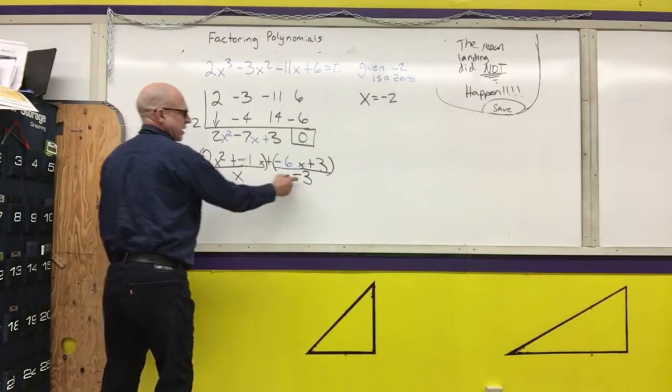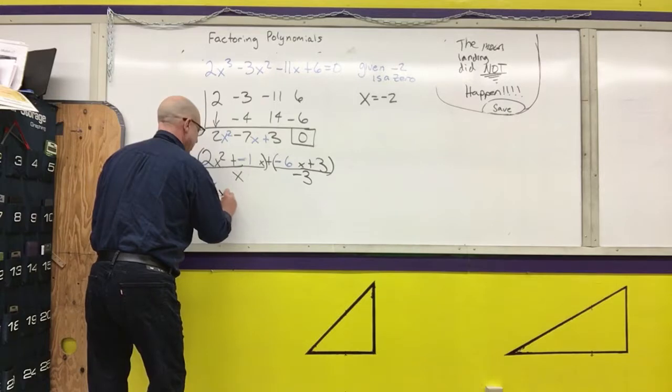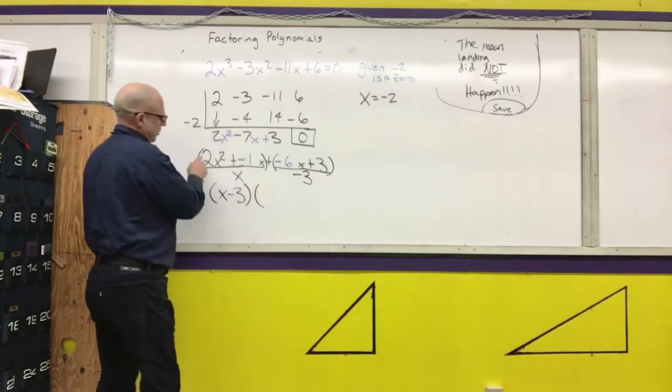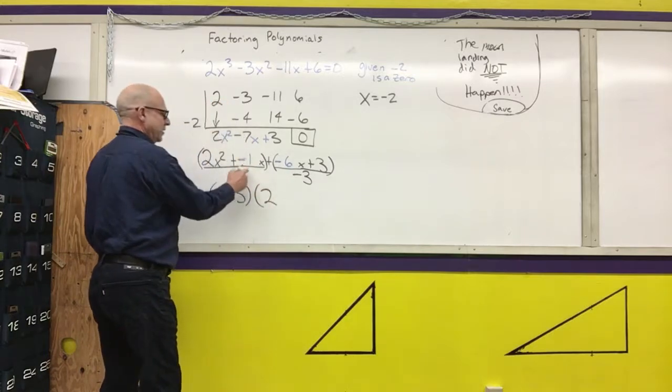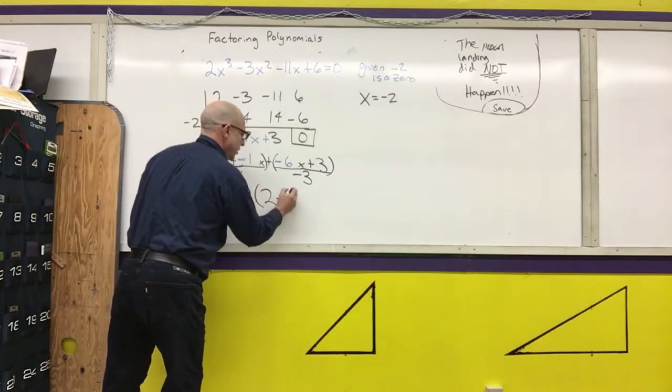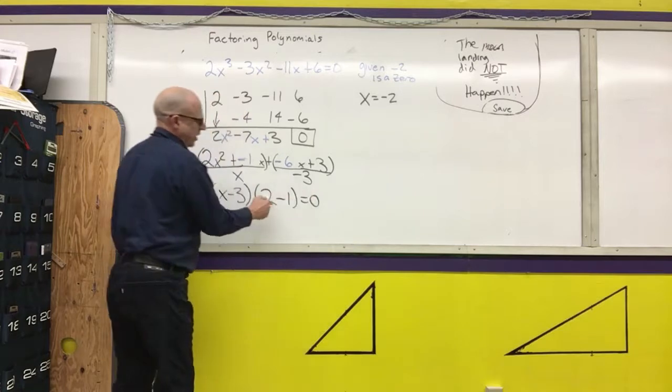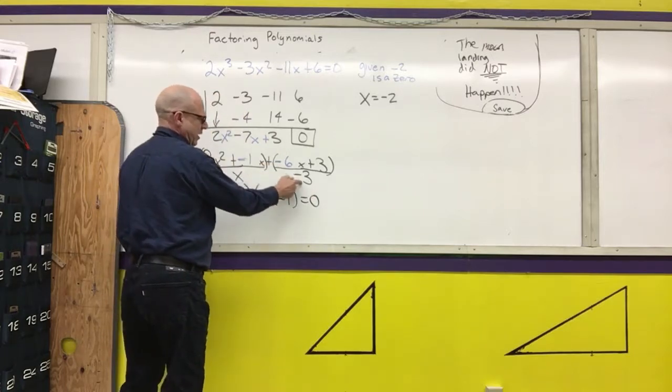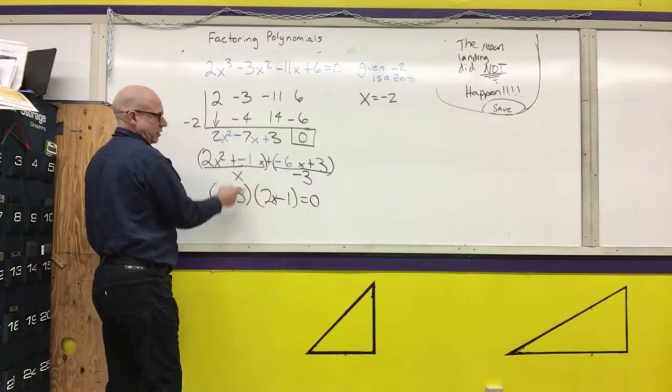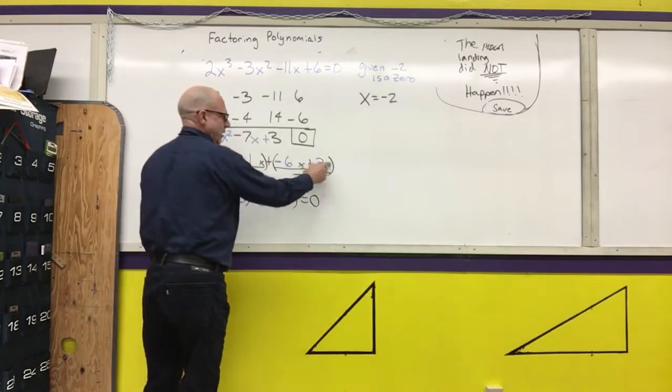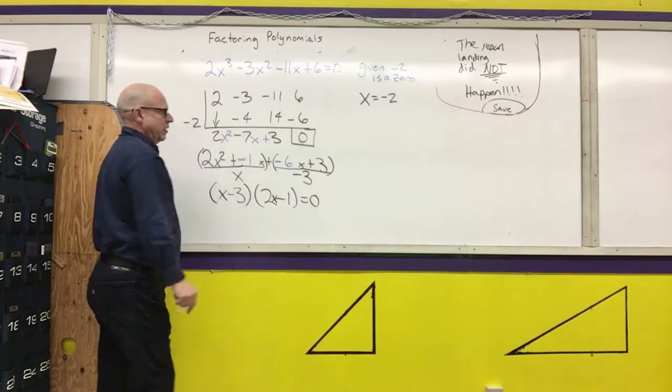So what this tells me is x minus 3 is a factor. And my second factor is 2x squared divided by x, which is 2x. Negative x divided by x is minus 1. I am going to check this. Negative 6x divided by negative 3 is 2x. So that's why I go back and check. And then 3 divided by negative 3 is, in fact, negative 1.